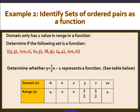Example 2: Identify sets of ordered pairs as a function. We want to determine if a set is a function — remember, the domain can only have one value in the range. I look for any x-values that repeat. I see 10 appears twice: (10, 1) and (10, 2). The domain value 10 has two different range values, 1 and 2. If I put 10 into an equation, I can't get two different answers. So no, this is not a function because the domain has two values in the range.